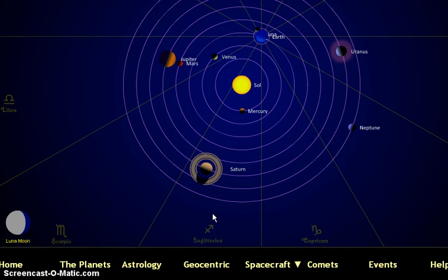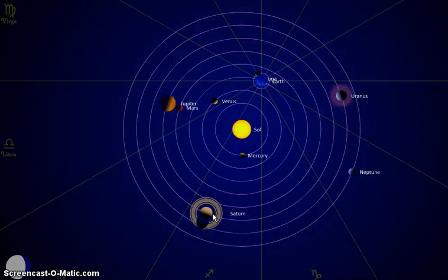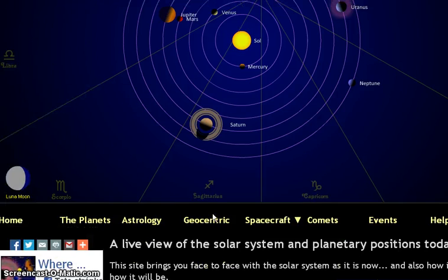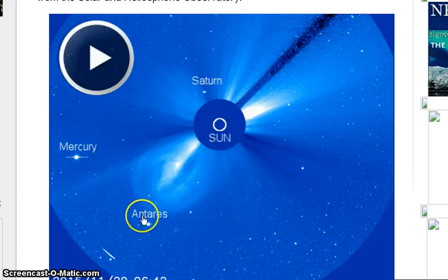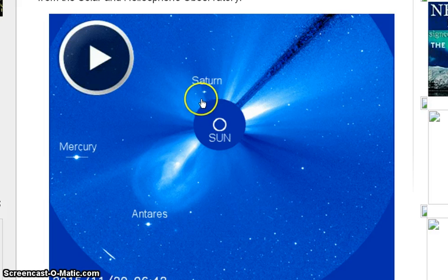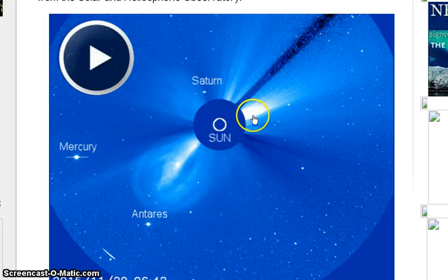You can check it for yourself later if you want, but something is totally, totally wrong here. This is not matching what they are saying to us. Then look: Antares is between Saturn and Mercury, which means Scorpio is on this side from the view of SOHO LASCO C2.